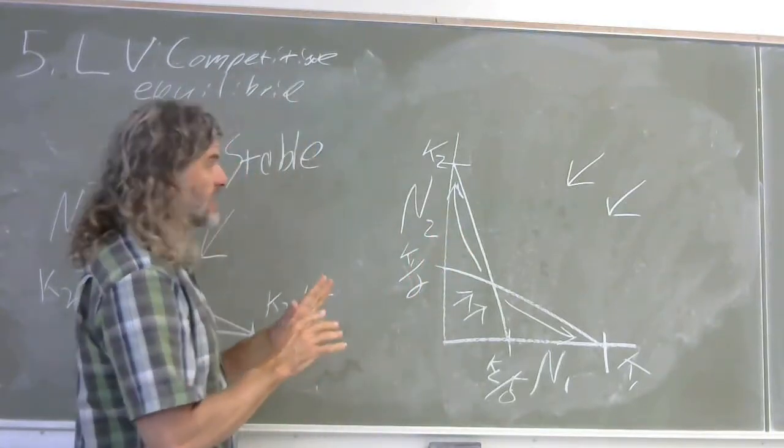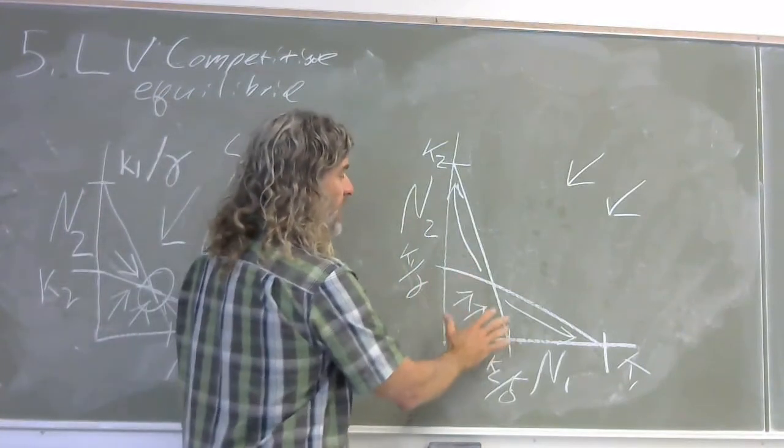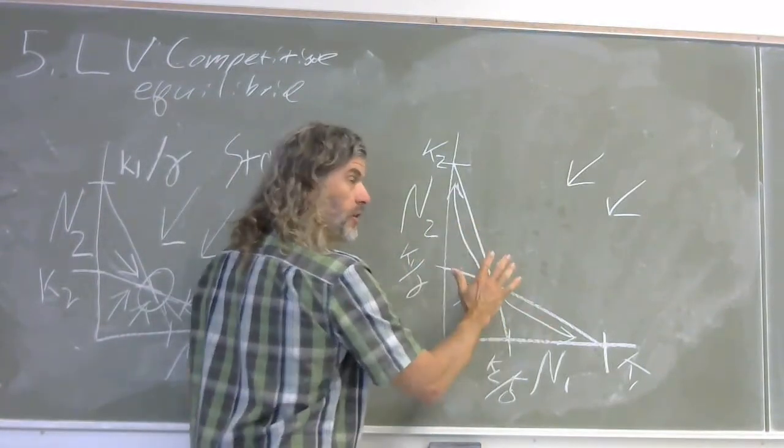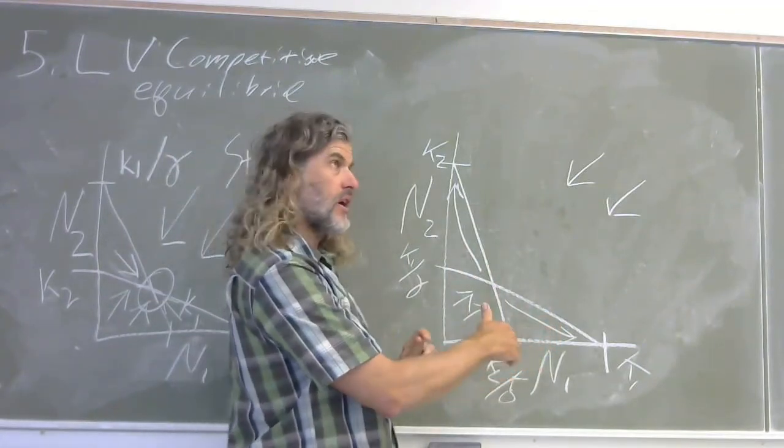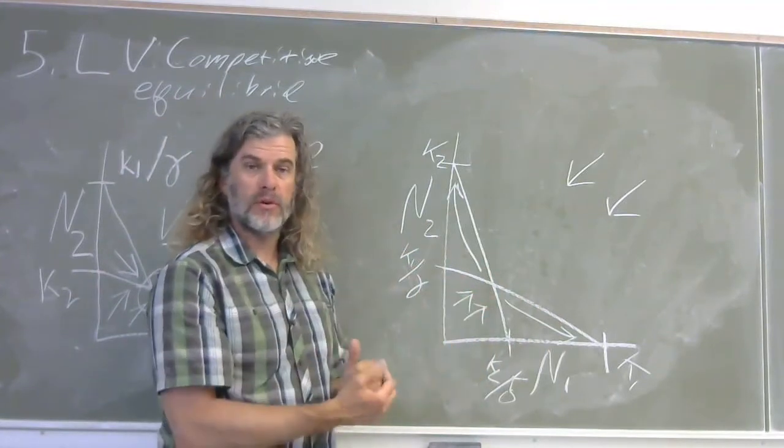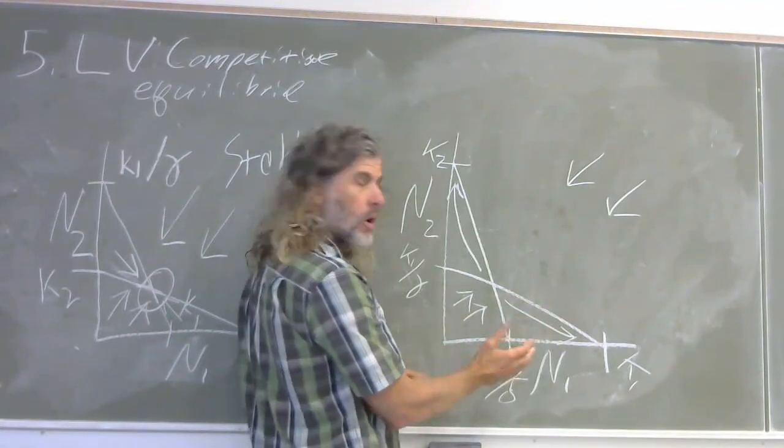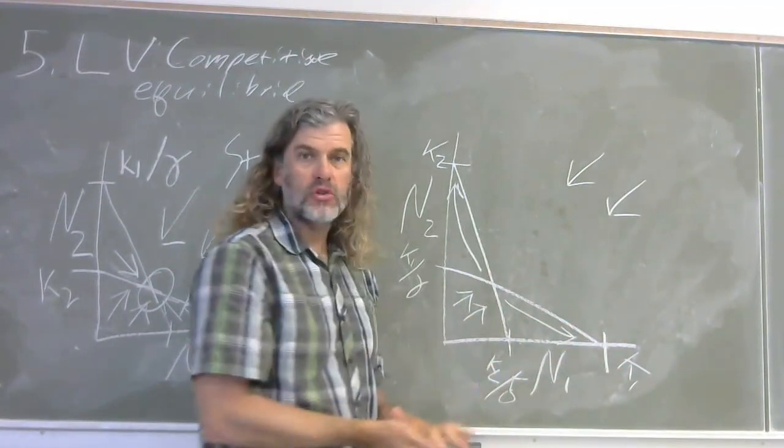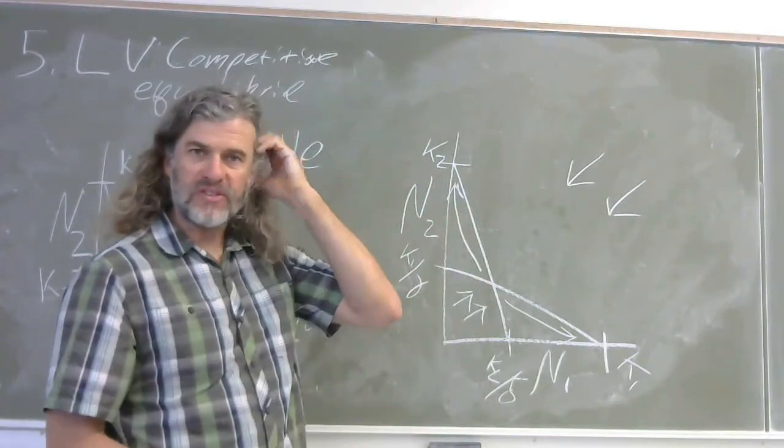This may seem like, well, this is an example where you can have competitive exclusion if the system shifts one way or another. Essentially, if you have too many of species one, or there's initially you have more than one species one, or you have a disturbance or some other change that shifts resources such that you have more species one, you can have competitive exclusion. You'll have a simplification of the system, the same thing can happen with species two.